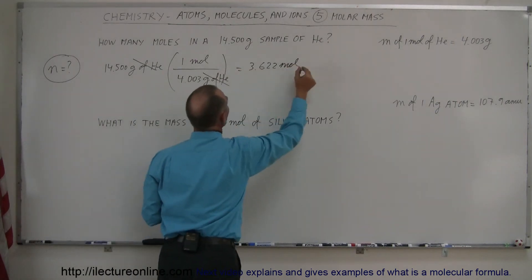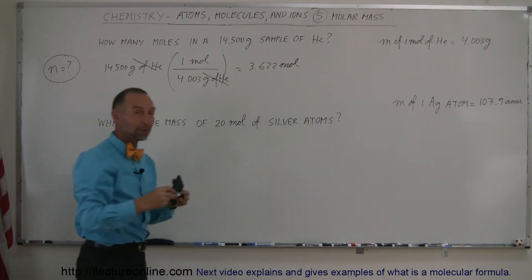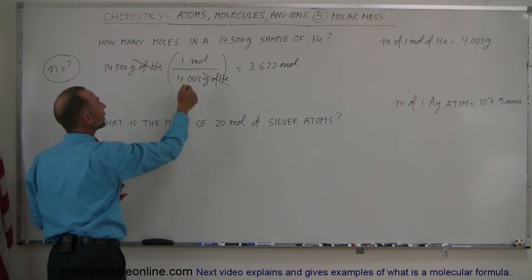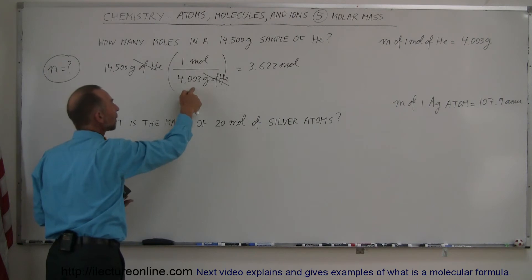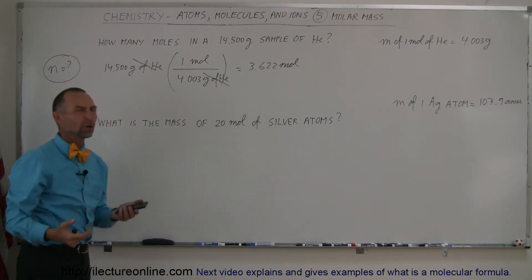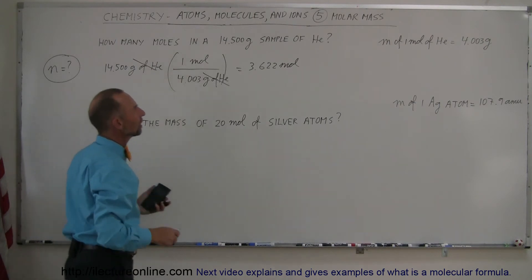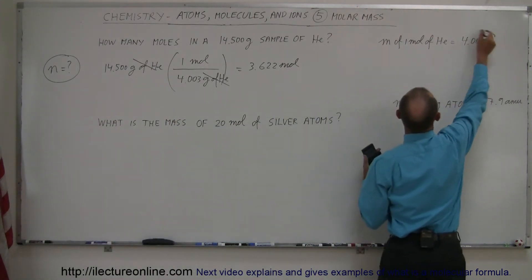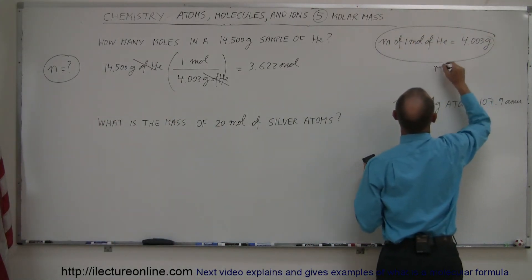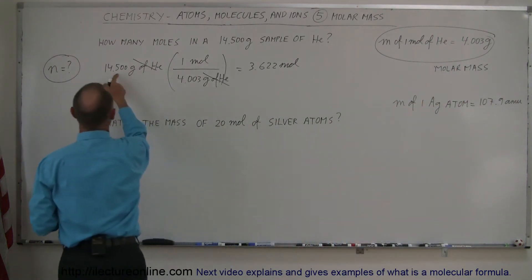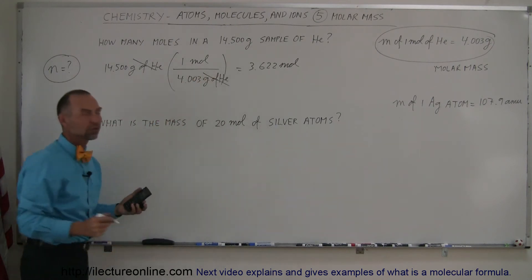So that's how we find the number of moles in any sample. We take the mass of the sample, and we multiply it times the ratio of the moles per grams of that sample. So in other words, we basically divide it by the molar mass. So this here is known as the molar mass of helium. So take the sample, the mass of the sample, divide by the molar mass, you get the number of moles.